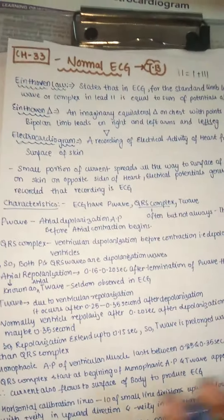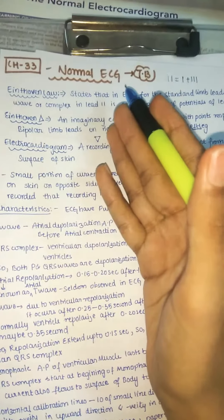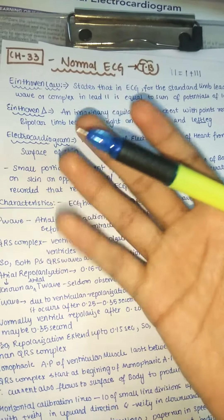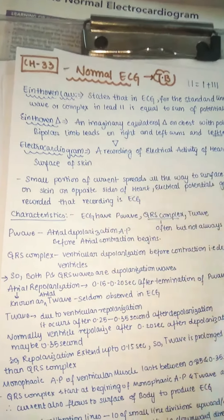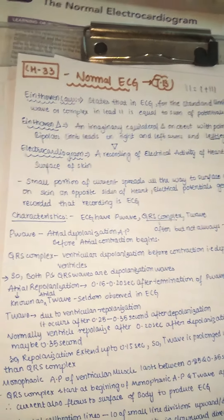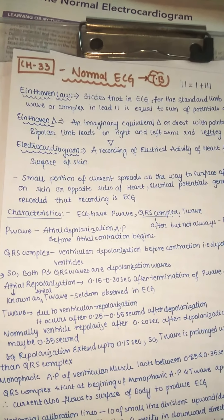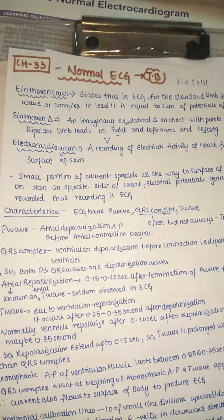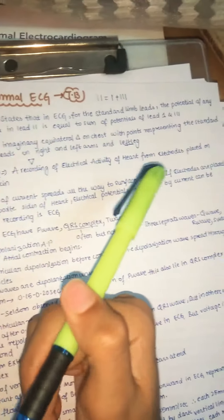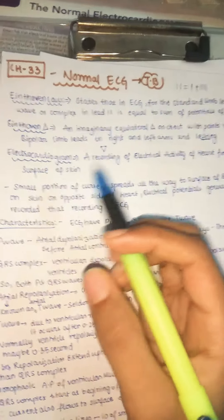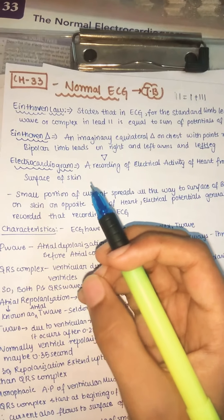Now let us see the electrocardiogram. ECG stands for electrocardiogram — it is a recording of the electrical activity of the heart, mainly from electrodes placed on the surface of the skin. These leads are nothing but electrodes placed either on the chest or on the limbs. If placed on the chest area, they are called chest leads; if placed on limbs, they are called limb leads.